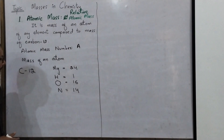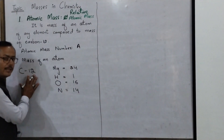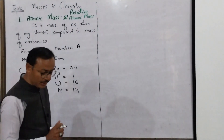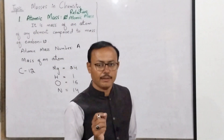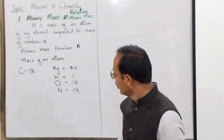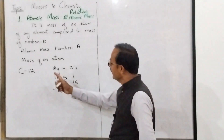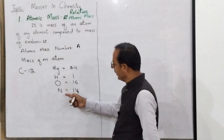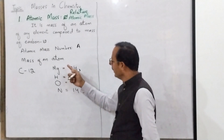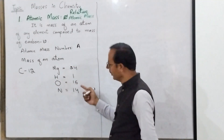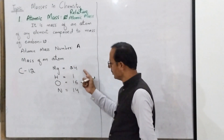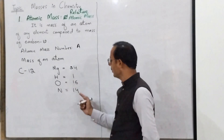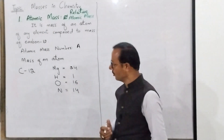And similarly, these masses we are telling by comparing with carbon-12. Carbon-12 means carbon's atomic mass is 12, and we are comparing all these atoms with carbon-12 and telling their atomic masses: magnesium's is 24, hydrogen's is 1, oxygen's is 16, nitrogen's is 14, and so on and so forth.